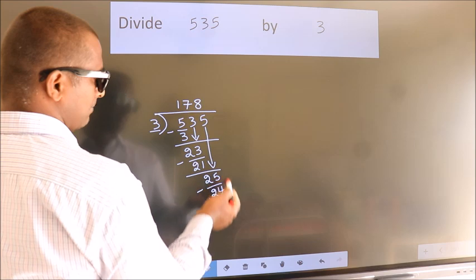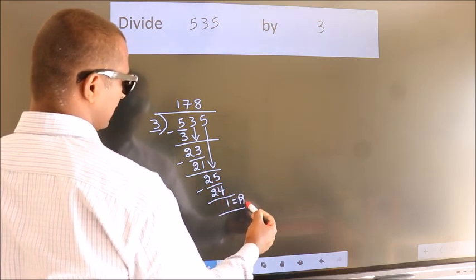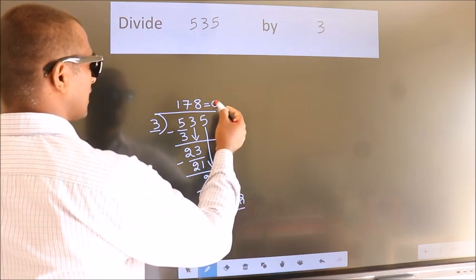No more numbers to bring down. So we stop here. This is our remainder. This is our quotient.